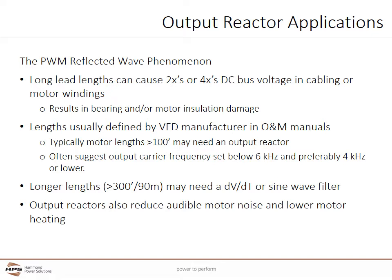The DC bus voltage is the AC voltage times 1.41, or the square root of 2. These voltage spikes can result in bearing and/or motor insulation damage. Long lead lengths between the VFD and motor are usually defined by the VFD manufacturer in their O&M manuals. Typically, motor lead lengths greater than 100 feet may need an output reactor. VFD manufacturers often suggest that the output carrier frequency be set below 6 kHz, and preferably below 4 kHz, on long lead lengths. Longer lengths greater than 300 feet or 90 meters may need a dV/dt or sine wave filter. Output reactors also reduce audible motor noise and lower motor heating.